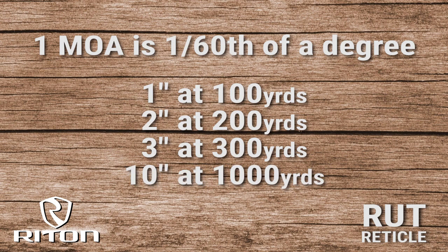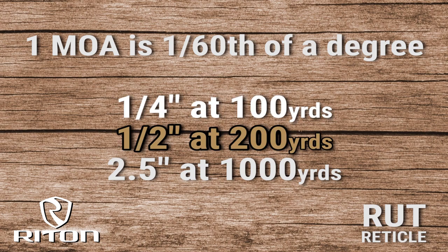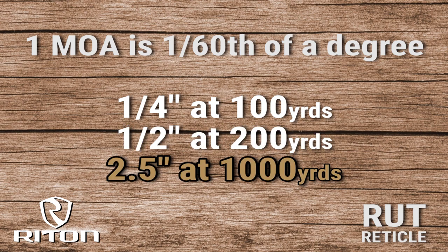Many of the Ride On Optics have quarter minute of angle adjustments. Those adjustments will be one quarter of an inch at 100 yards, one half an inch at 200 yards. And if we took that out to 1,000 yards, one click or one quarter minute adjustment would equal 2.5 inches.